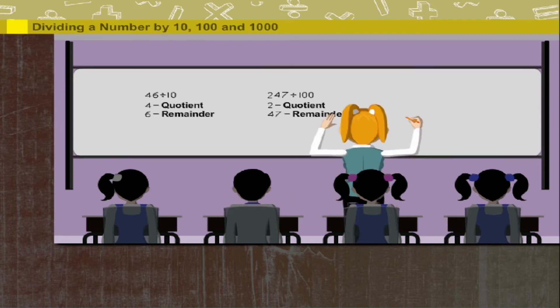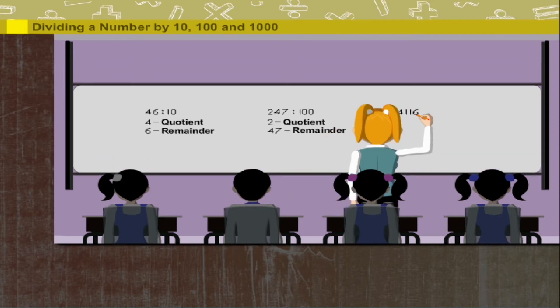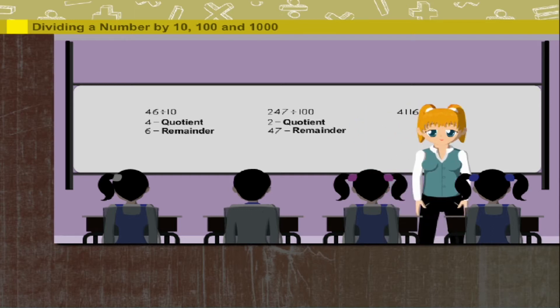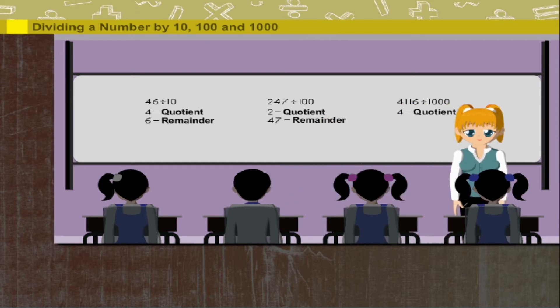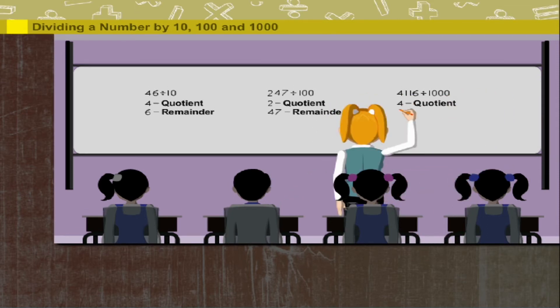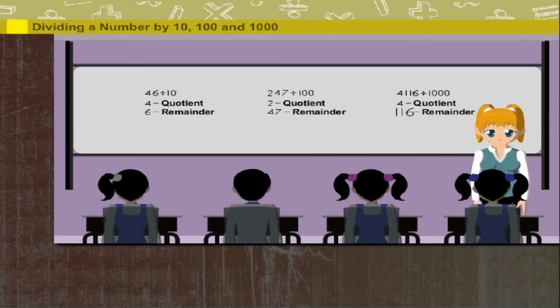This time it's 4,116 divided by 1000. Nancy ma'am says simple. 4 is the quotient and 116 is the remainder. How easy it is.